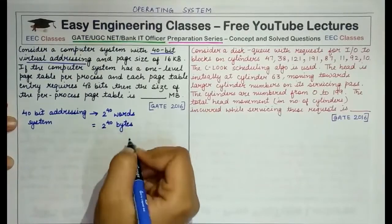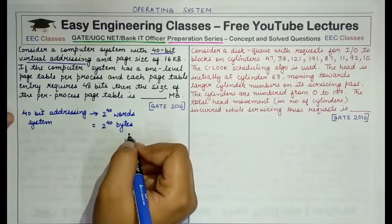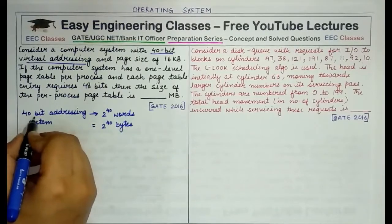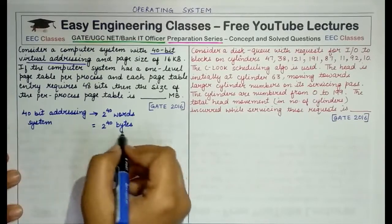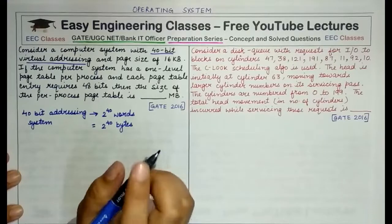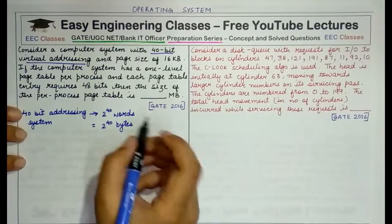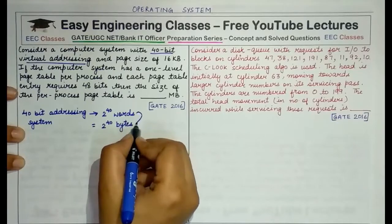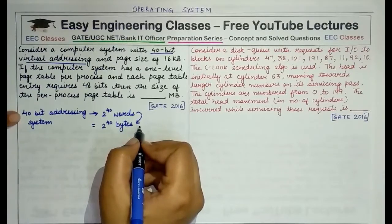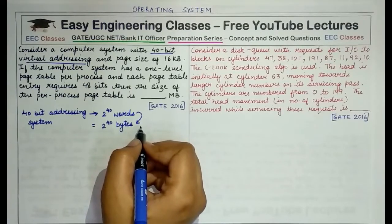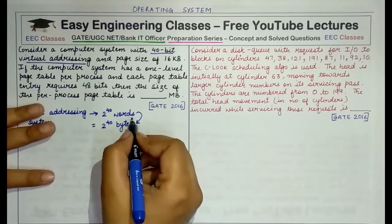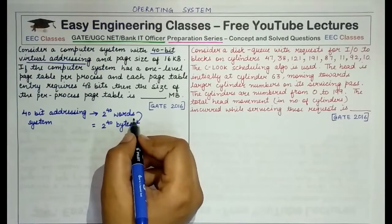One very common mistake students make in such questions is writing 2^40 bits. You do not write bits. For any address space, the basic addressable unit is words, and by default the value of one word is taken to be one byte. So no matter how the problem is stated — even if it says n-bit system — the total size of address space is always in terms of words, and a word is one byte unless specified otherwise.